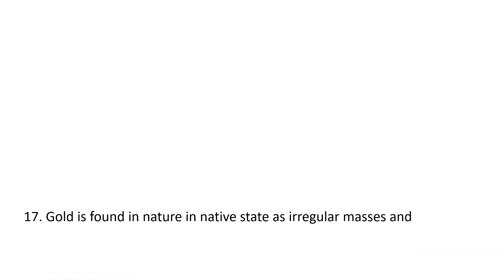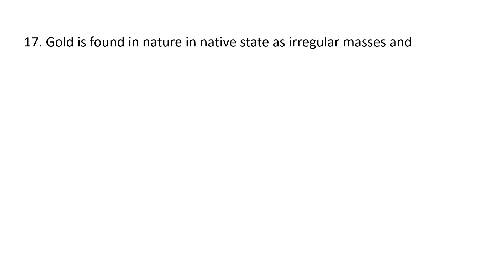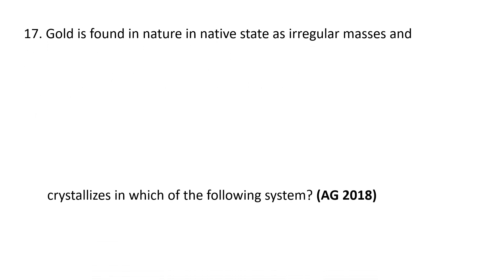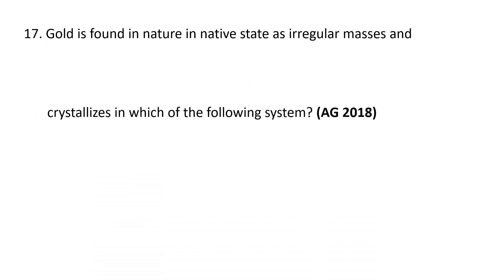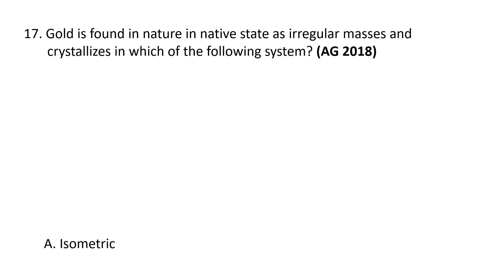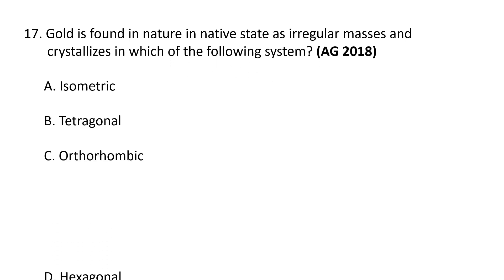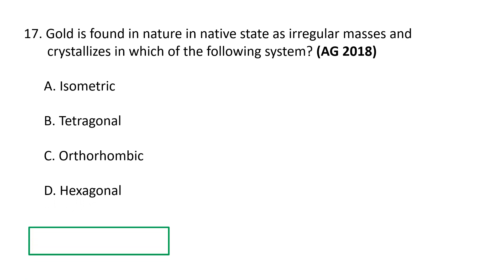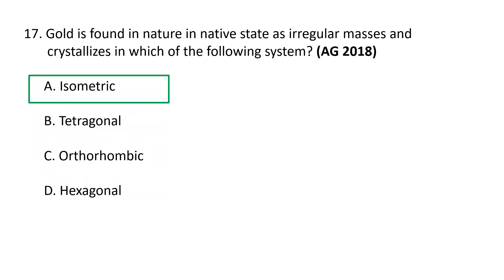Next question. Gold is found in nature in its native state as irregular masses and crystallizes in which crystal system? A. Isometric, B. Tetragonal, C. Orthorhombic, D. Hexagonal. The answer is A — gold crystallizes in the isometric or cubic system.